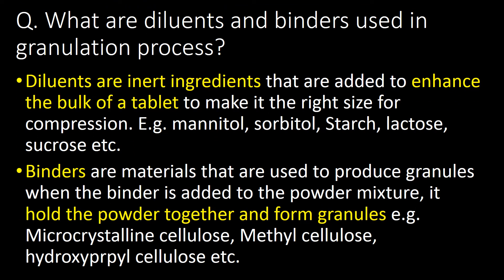What are diluents and binders used in the granulation process? Diluents are inert ingredients added to enhance the bulk of the tablet to make it the right size for compression, e.g., mannitol, sorbitol, starch, lactose, sucrose. Binders are materials used to produce granules — when added to the powder mixture, binders hold the powder together and form granules, e.g., MCC (microcrystalline cellulose), methylcellulose, hydroxypropylcellulose.